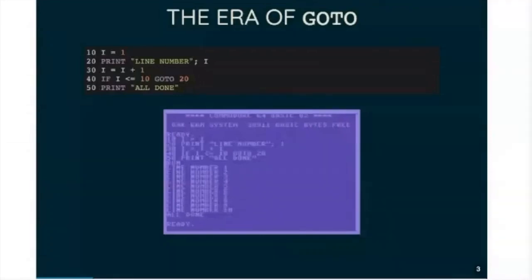So the way this works is that on line 40, you check if your loop variable i is less than or equal to 10, you go to line 20. But there's no, other than the number next to the go to, there's no actual link. So the only time you know that line 20 is a place that your program can jump to is when you get to line 40 and read the go to.